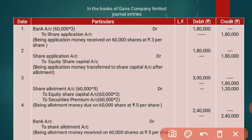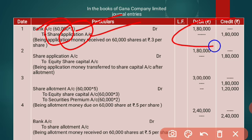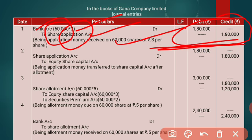The first stage is receiving the application money. The journal entry is: Bank Account Dr to Share Application Account. The company issued 60,000 shares. On application, they collected 3 rupees per share. So the bank will receive 60,000 × 3 = 1,80,000 rupees. All shareholders subscribed — all 60,000 shares were subscribed. This is for the issue of application money received.